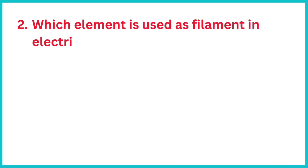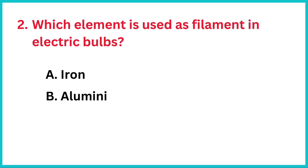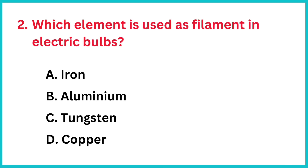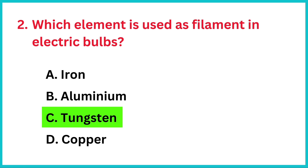Which element is used as filament in electric bulbs? The correct answer is option C: Tungsten.